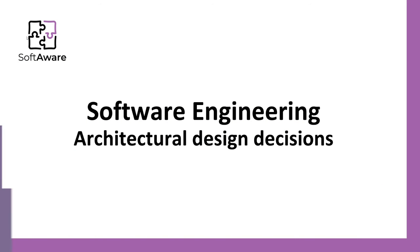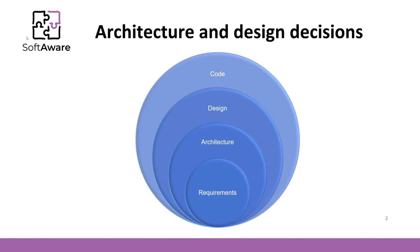In this video I'm going to talk about architectural design decisions that software engineers and architects need to make. Remember, the architecture is a critical link between requirements and the software that will be built.